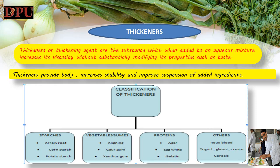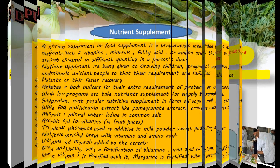Catering uses of thickeners: 1. Soups and sauces. 2. Jam and jelly. 3. Chewing gum and candies. 4. Mousses. 5. Confectionery and bakery.